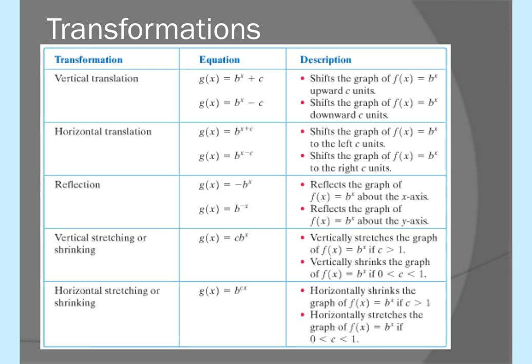Just like every other graphing function, you can use transformations with exponential graphs — sometimes they get a little confusing. The most important one, as far as what affects your horizontal asymptote, is the vertical translation. The vertical translation happens if you add or subtract after the function — outside the exponent — and when you add something it shifts the graph upward; subtracting shifts it downward. That also shifts the horizontal asymptote.